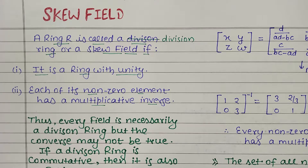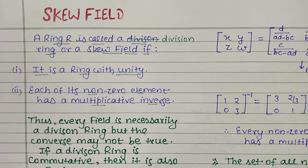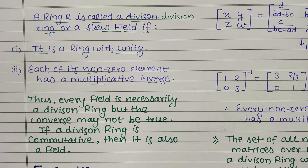In short and sweet: what is a skew field? There are two properties. If any ring satisfies both these properties, that ring becomes a division ring or skew field. First property: it must be a ring with unity — a multiplicative identity must exist. Second: each non-zero element must have a multiplicative inverse.